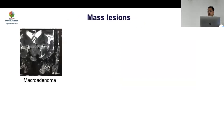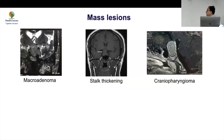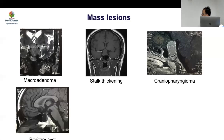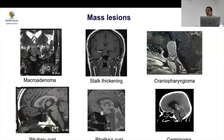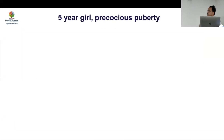Mass lesions seen on MRI include large macroadenomas, which grow slowly through the diaphragma sellae giving a figure-of-8 or snowman appearance. You can also have stalk thickening, craniopharyngioma coming from above — it is suprasellar because it has a peripheral rim coming from above — a pituitary cyst appearing as a pure cystic lesion, a Rathke's cleft cyst as a remnant of Rathke's pouch, or a germinoma presenting as a small stalk lesion.